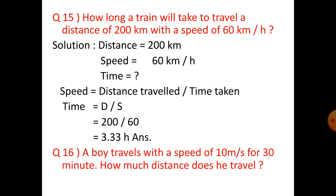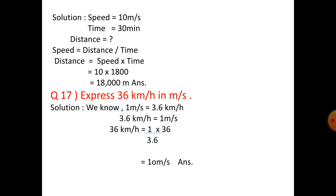Question 16: A boy travels with a speed of 10 meter per second for 30 minutes. How much distance does he travel? Speed is 10 meter per second, time is 30 minutes. Distance equals speed into time. We need to convert 30 minutes to seconds: 1 minute equals 60 seconds, so 30 minutes equals 1800 seconds. Therefore, distance equals 10 into 1800, which equals 18,000 meters.